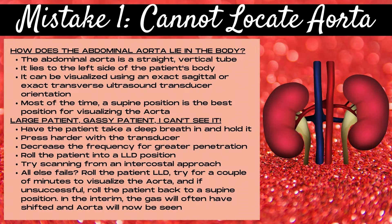Mistake number one when imaging the aorta on ultrasound is not being able to find the actual aorta. The abdominal aorta is a straight vertical tube and it lies to the left side of the patient's body. If you're looking in the center or to the right side of the patient's body, you're either going to not see any long straight tubes or you're going to run into the IVC. It's very common to mix up the IVC and the aorta when you're first learning aorta ultrasound.